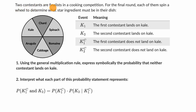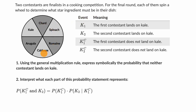We're told that two contestants are finalists in a cooking competition. For the final round, each of them spins a wheel to determine what star ingredient must be in their dish — the primary ingredient. We can see it could be chard, spinach, romaine, lettuce, cabbage, arugula, or kale.